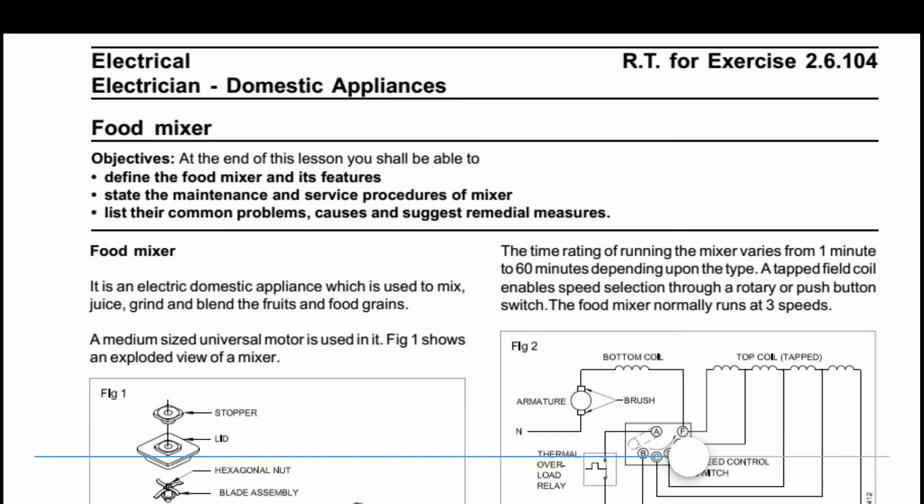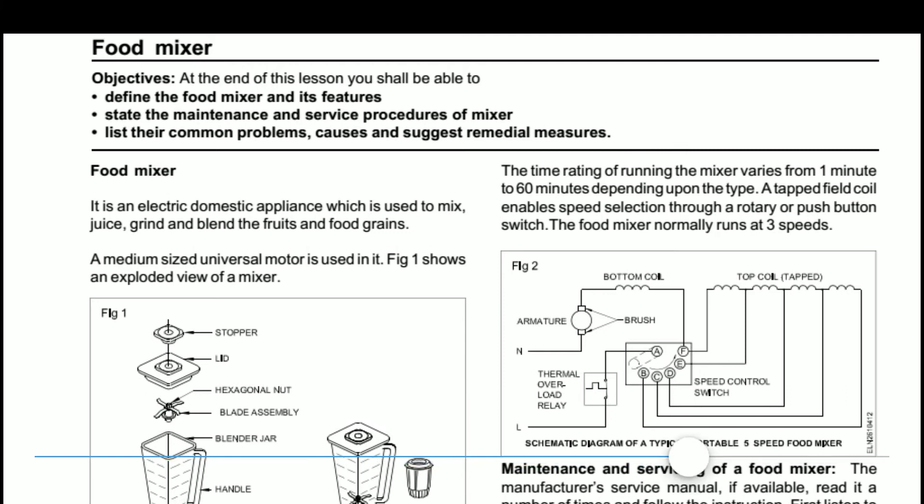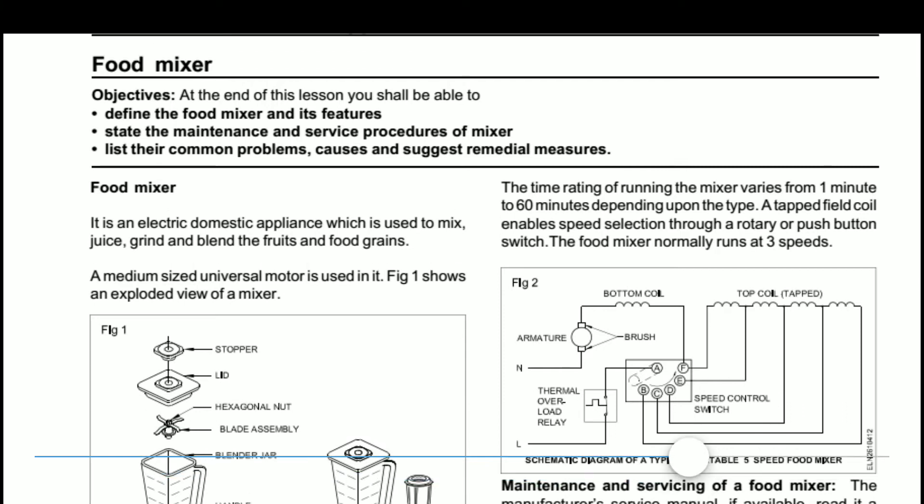The food mixer is a domestic appliance. If you use the food mixer, you can ask: what is the food mixer? The answer is, it is an electric domestic appliance. The food mixer is one of the domestic electric appliances which is used to mix.